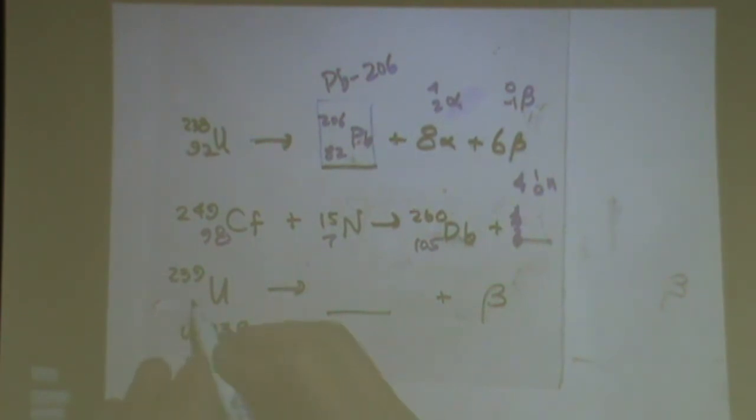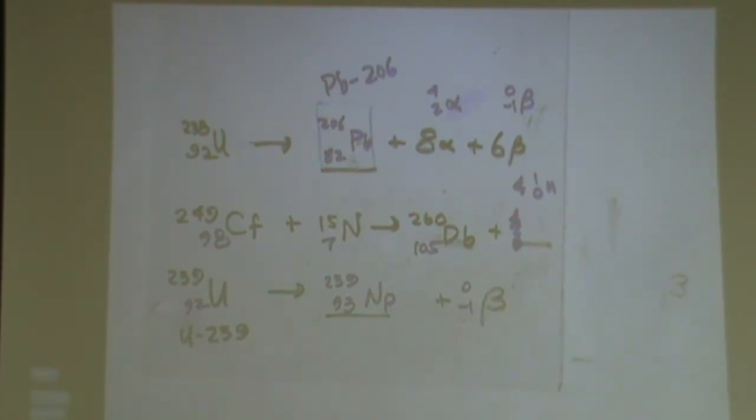Here, uranium is 92. This is 0 and minus 1. It has to be 239 here. And this is 93. What is this? Neptunium. Any questions on either of those?